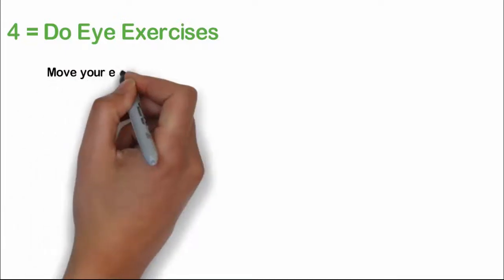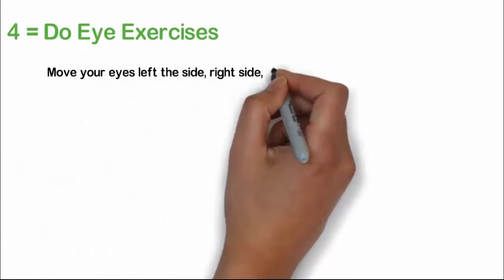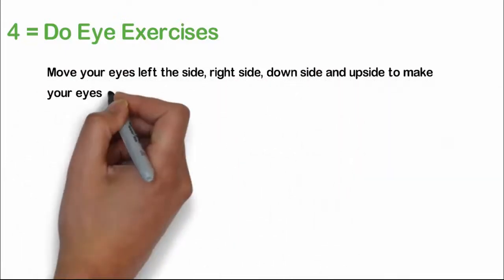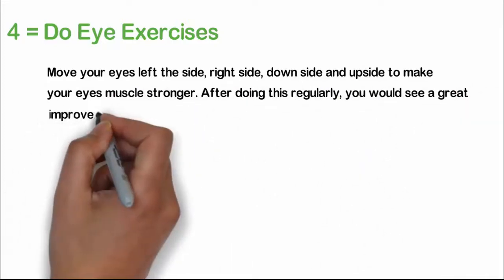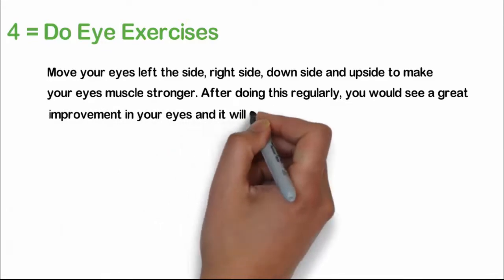Exercise number four: do eye exercises. Move your eyes left side, right side, downside, and upside to make your eye muscles stronger. After doing this regularly, you would see a great improvement in your eyes and it will take more time for them to get tired.